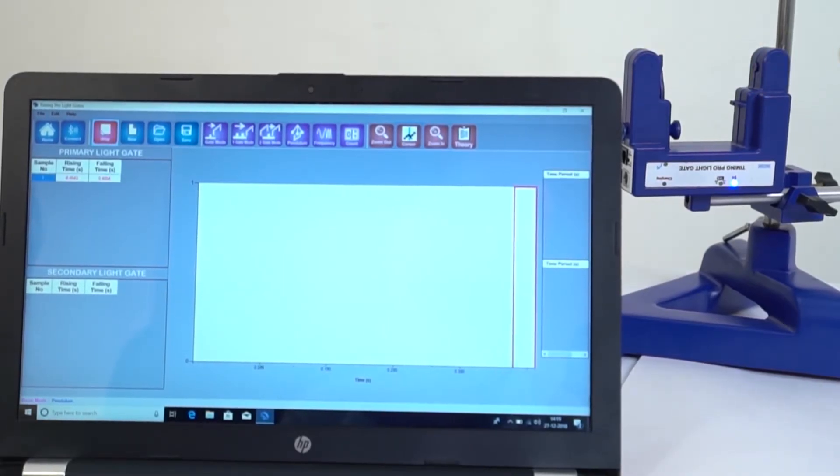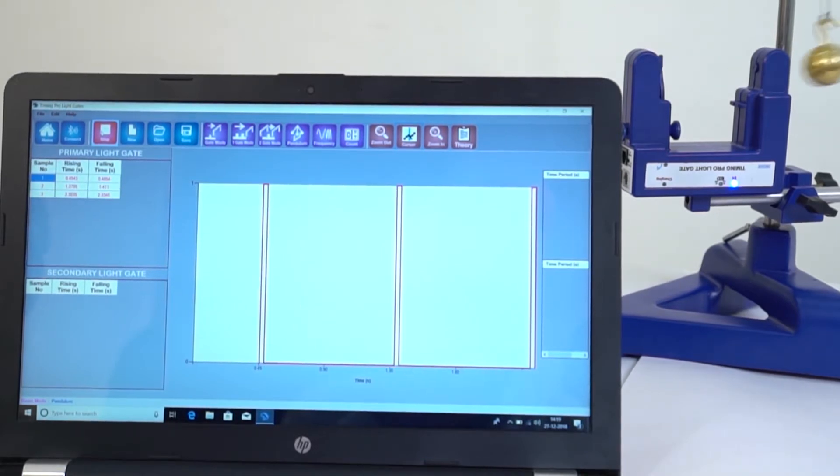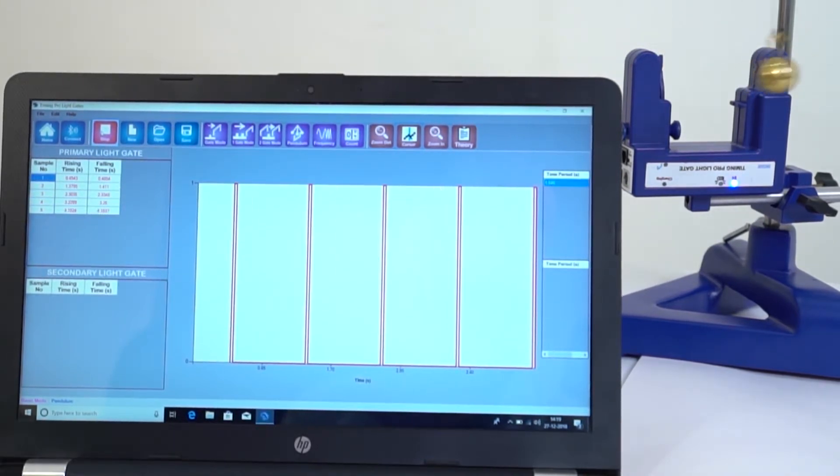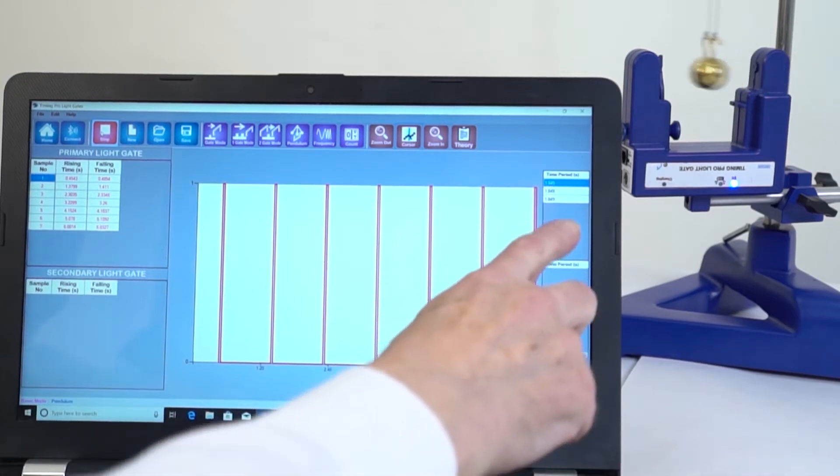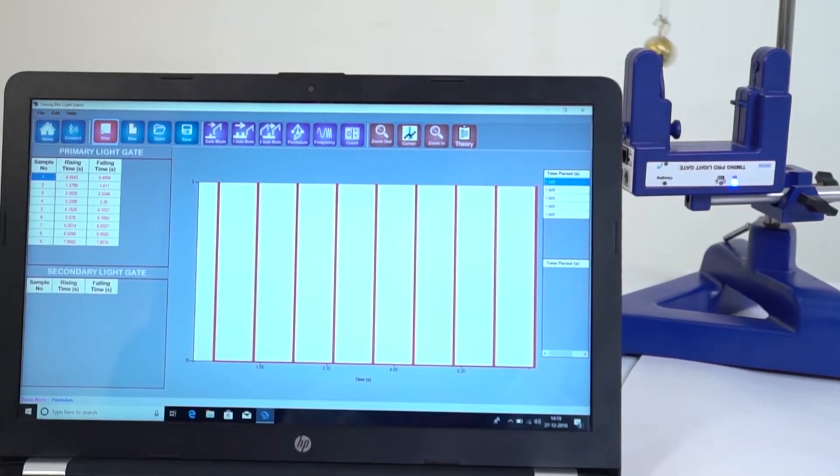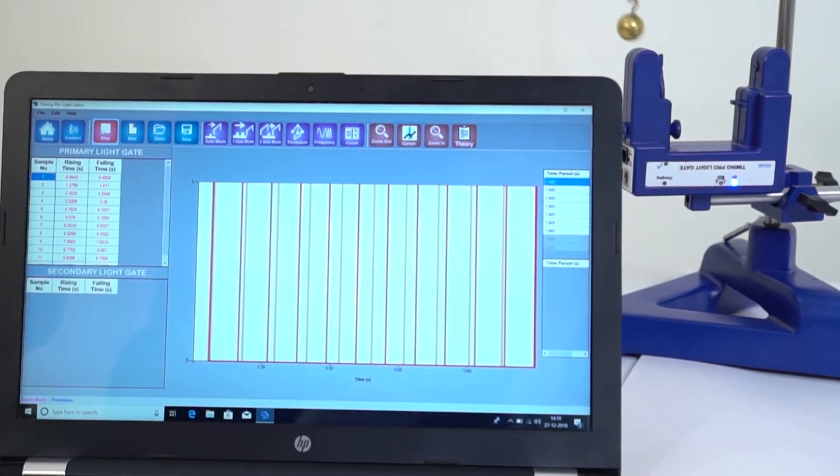Look at the software. We see a regular series of interruptions. The table to the right of the graph shows the period of the pendulum is constant.